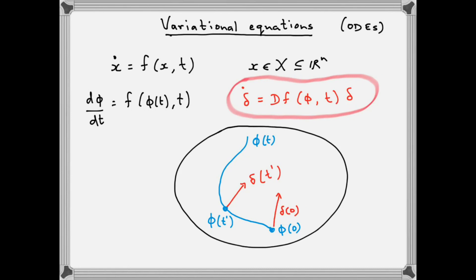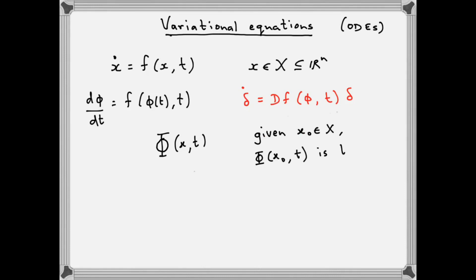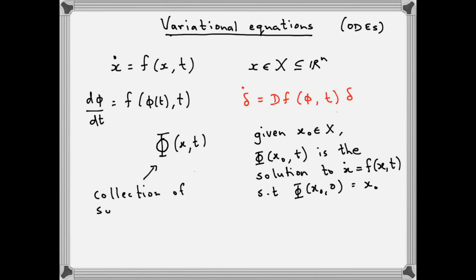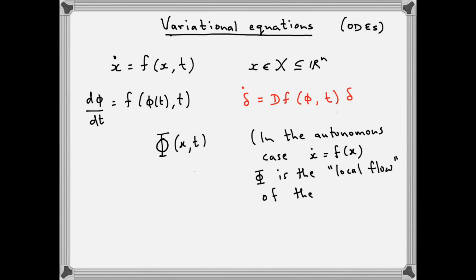This geometrical picture is connected with the spatial derivative of the set of solutions. If we fix the initial time to be zero, then for each point in the domain x of the differential equation we have one solution to the ODE, and we refer to this collection of solutions as capital Phi(x, t). For any fixed x0 in the state space, Phi(x0, t) is the solution to the differential equation with initial value x0. In the autonomous case, Phi would be referred to as the local flow of the differential equation, but in general in the non-autonomous case it doesn't define a flow.